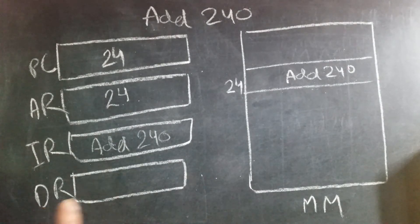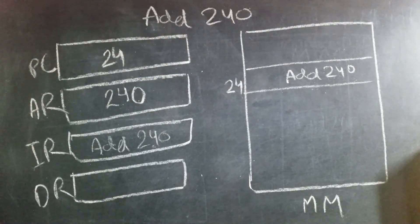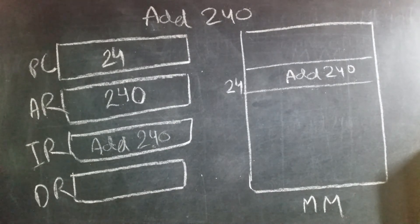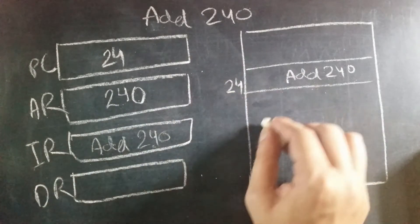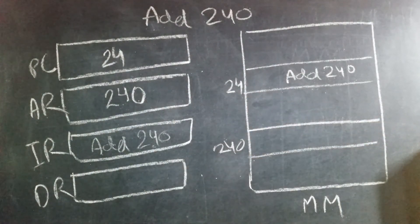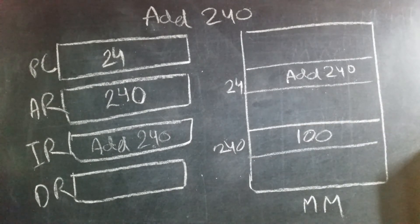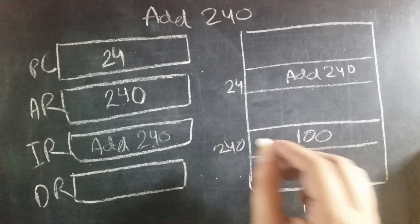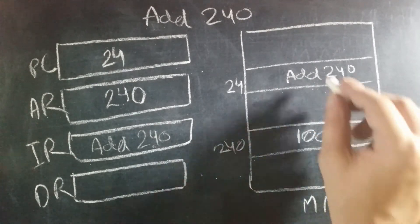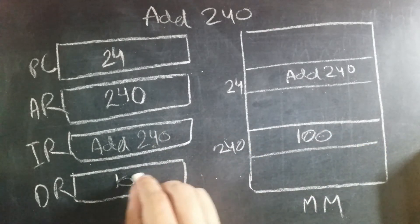Now since this instruction has an address, the address will go back again to address register. Now address register will have 240. Again address register will place this address on the address bus, which will go to main memory. In the 240th location, let there be any data — let's say 100. Now this data will come to data register, since it is data and not an instruction.